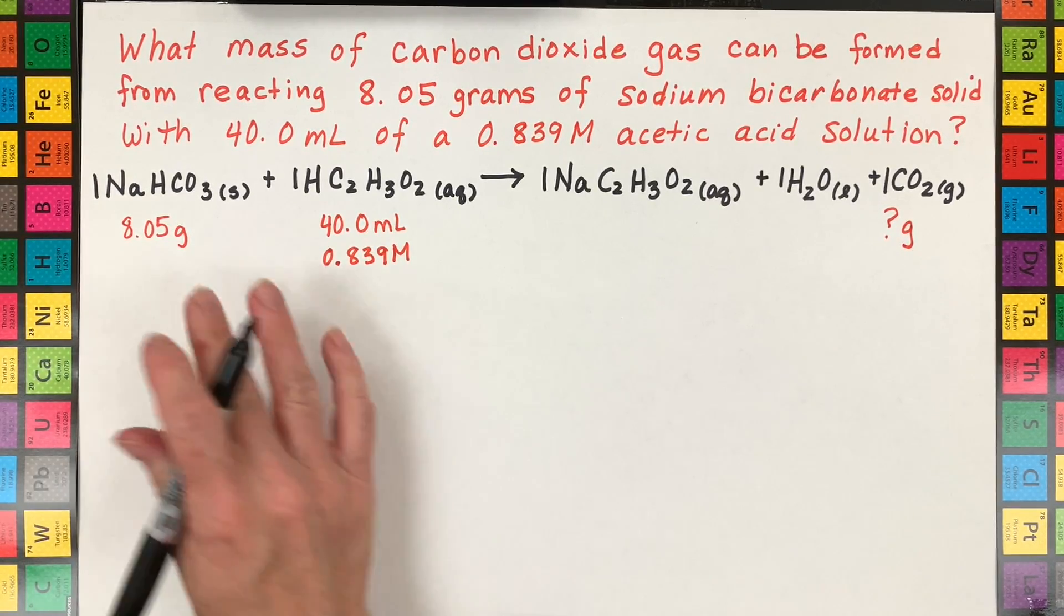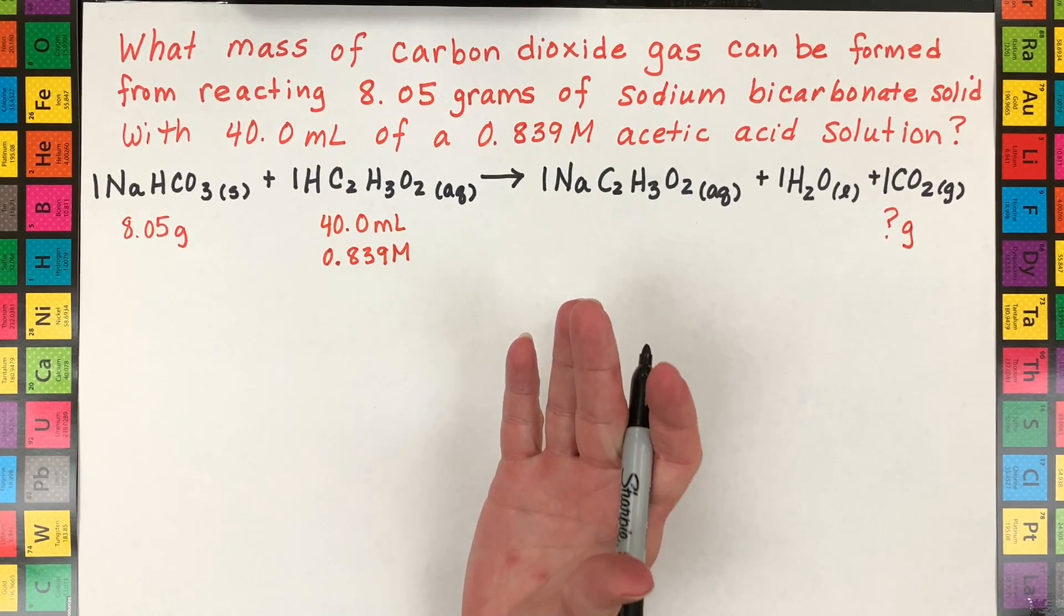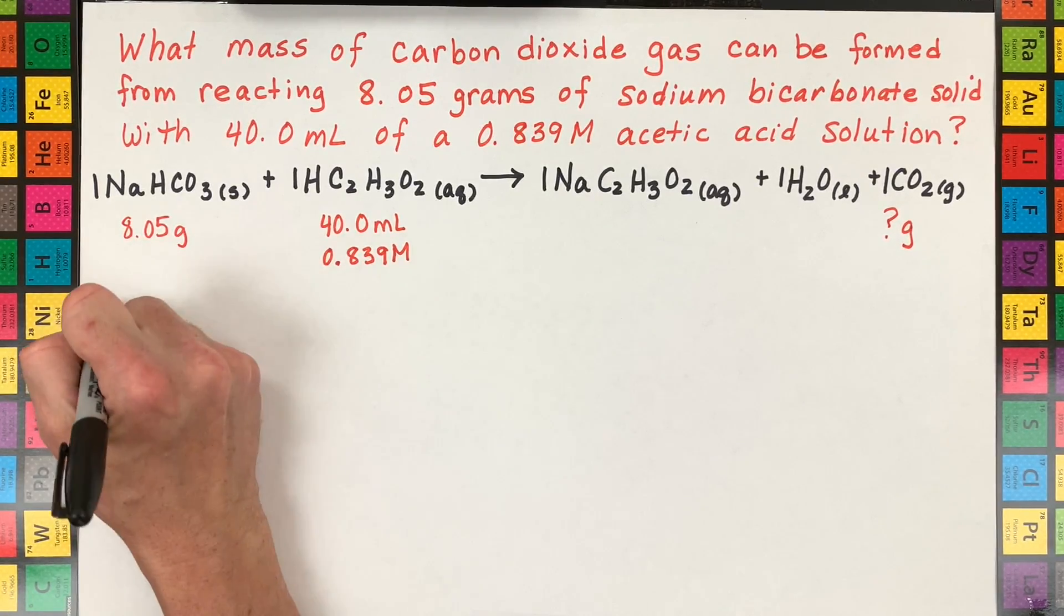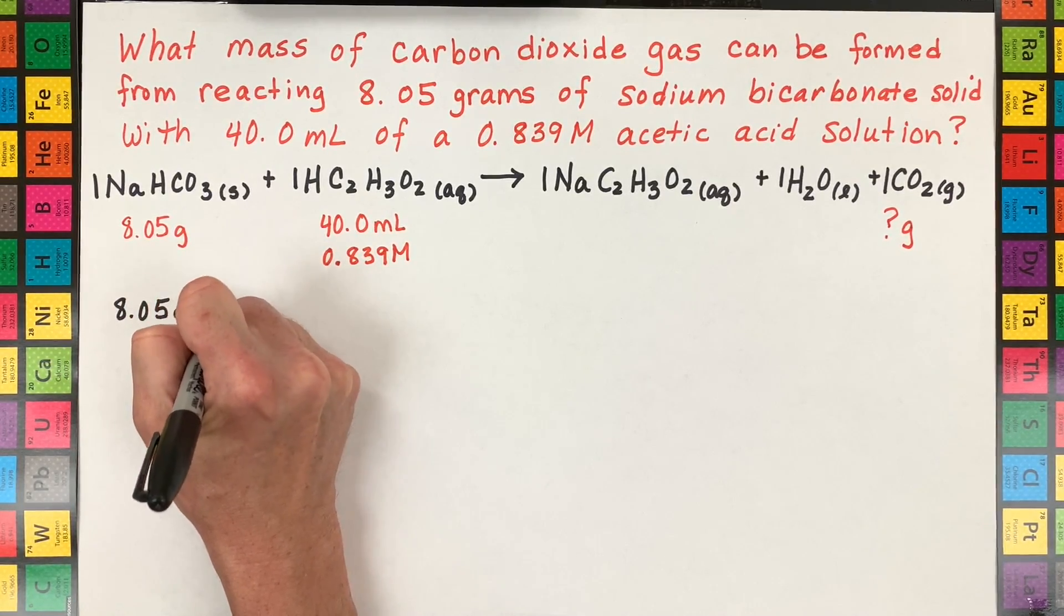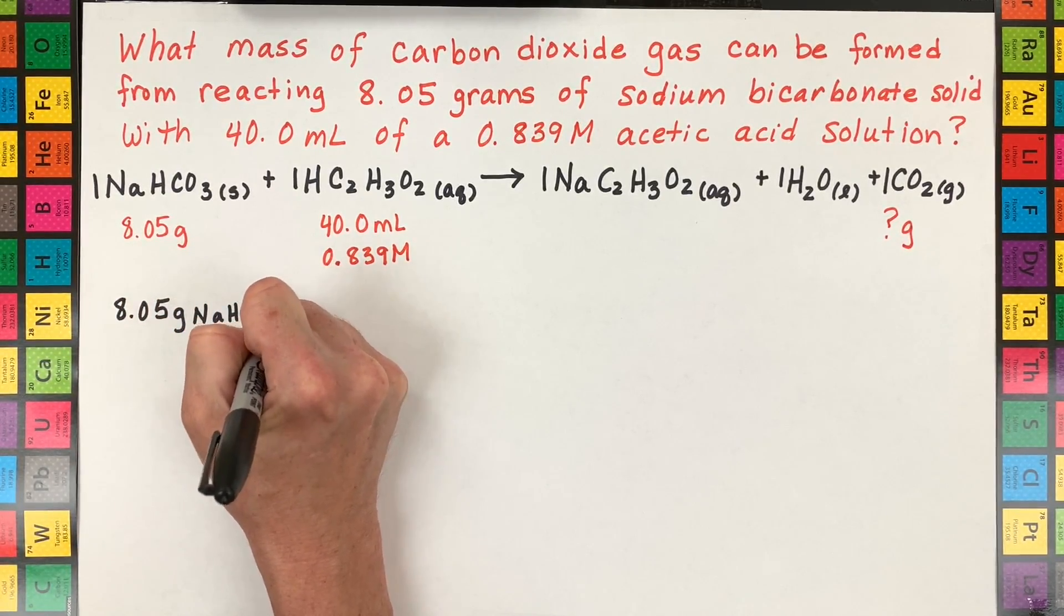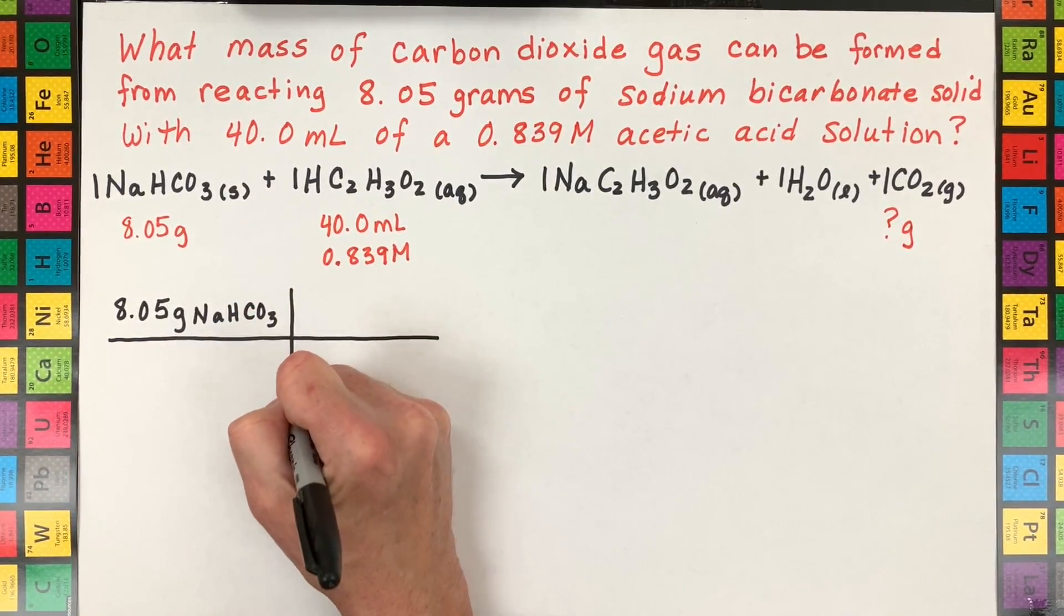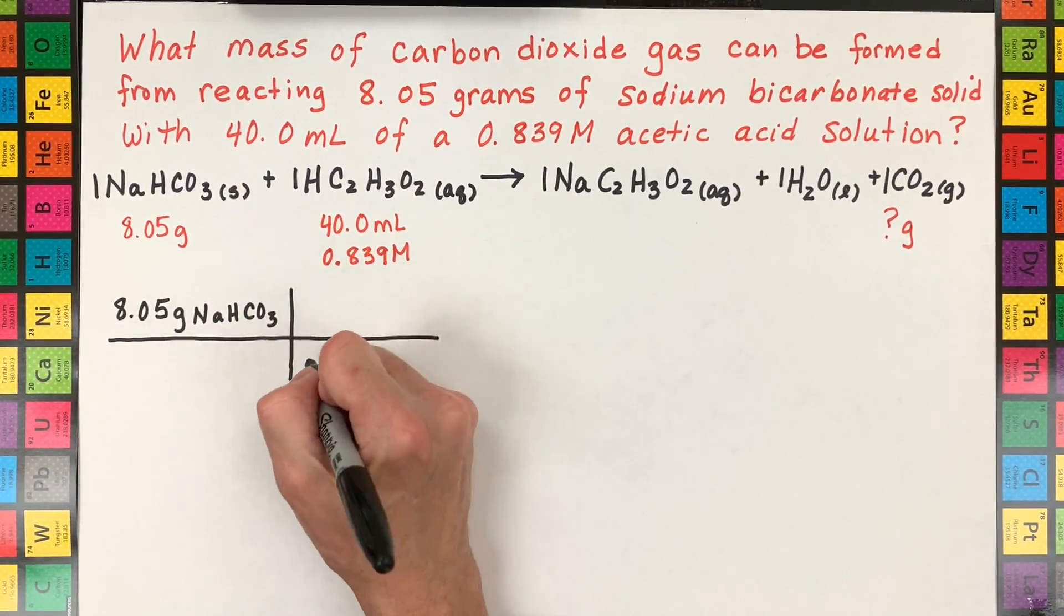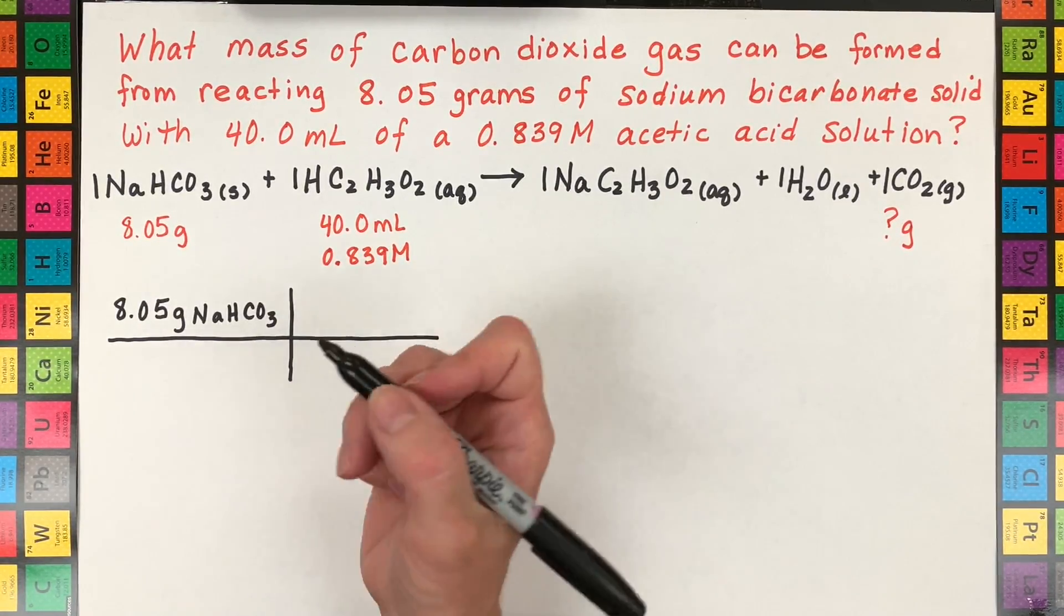So what you're going to do first is you don't know who's limiting in excess technically with the numbers you maybe can tell from the video though. So the first thing you have to do is you have to calculate the moles of each of your reactants and compare those mole amounts to see which one of these was limiting and which one was excess. The reason I wanted you to see the demonstration was I think you have an idea already. If not let's do the math.